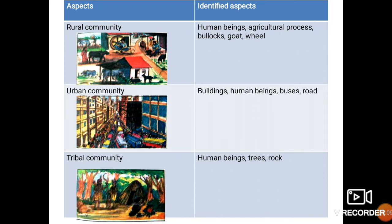The aspects that help us identify an urban community include buildings, human beings, buses, and roads. For a tribal community, the identifying aspects include human beings, trees, and rock. So these types of aspects belong to the tribal community.